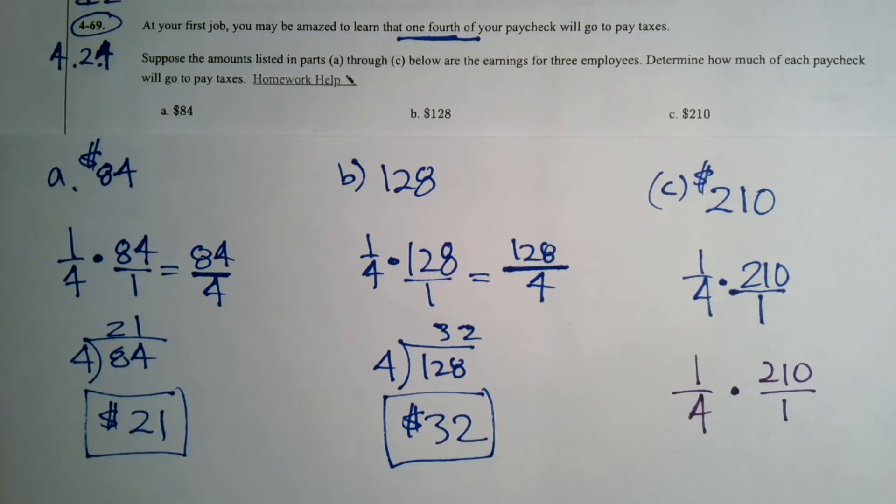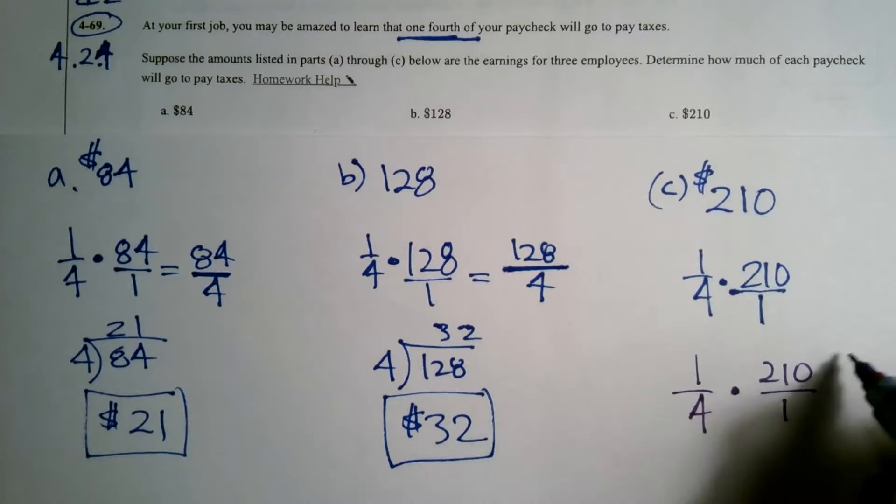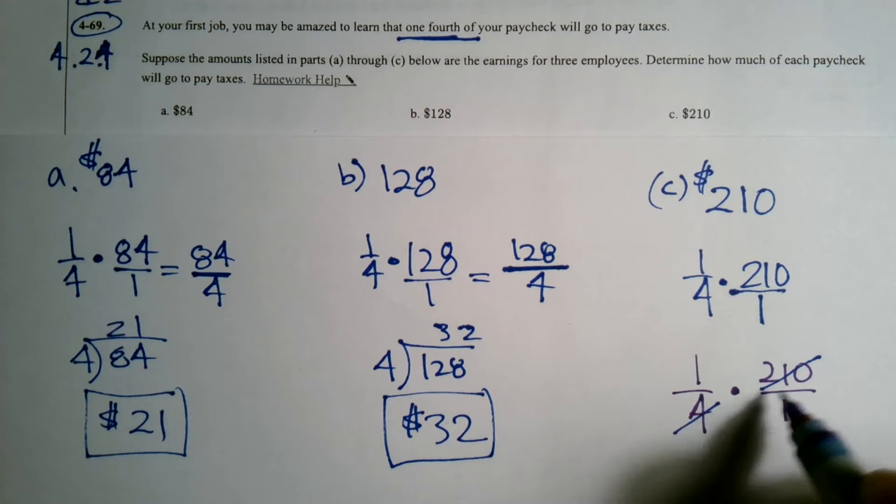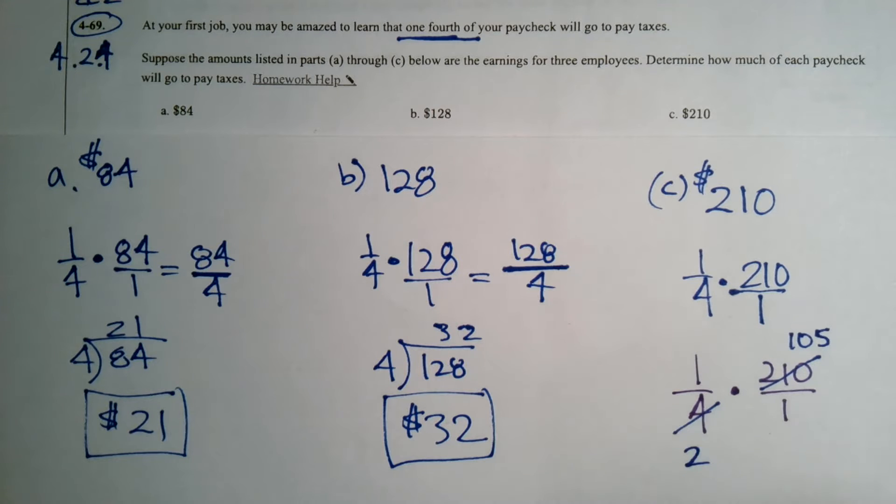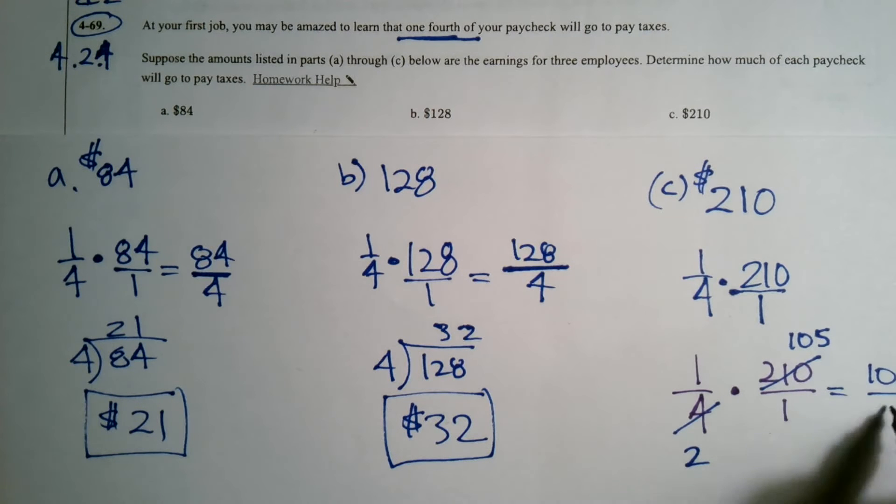When you're multiplying fractions, instead of waiting to do the division, you can actually do this simplifying diagonally. Let's just divide each of these. Let's start with two. I know two goes into four and two goes into 210. Two goes into four twice. Two goes into 210 105 times. So now I can look at this as one times 105 is 105 over two times one is two.